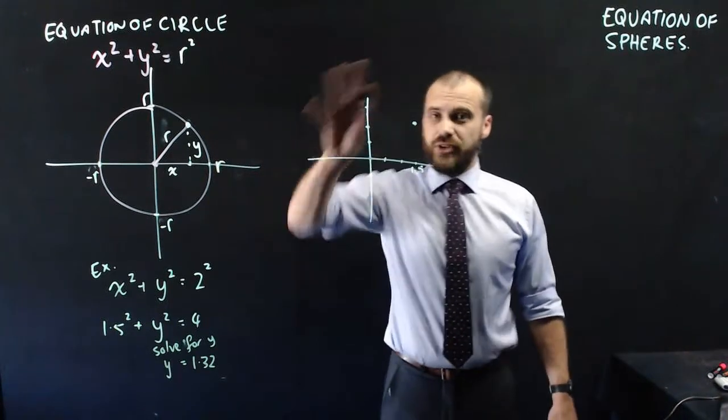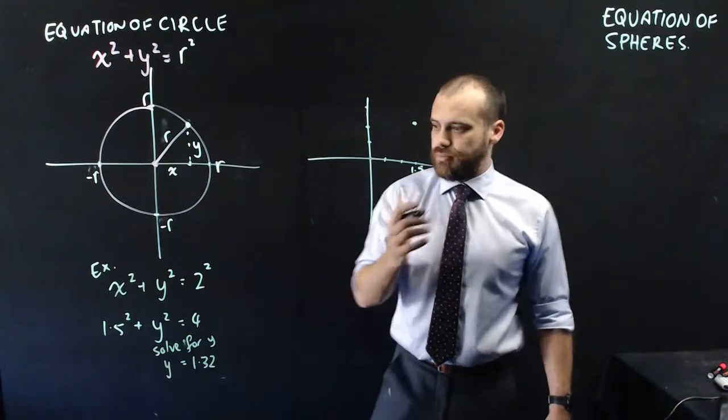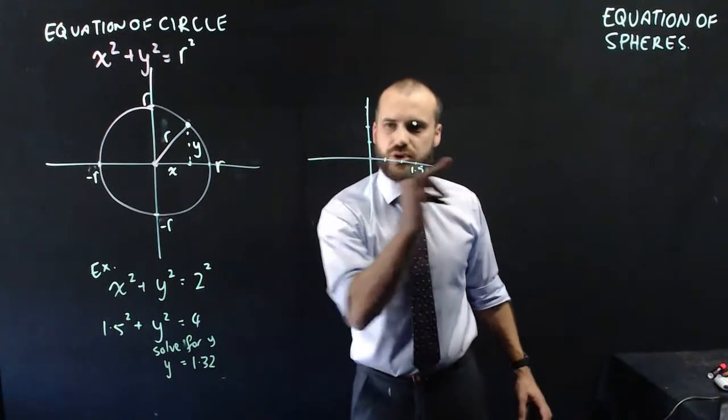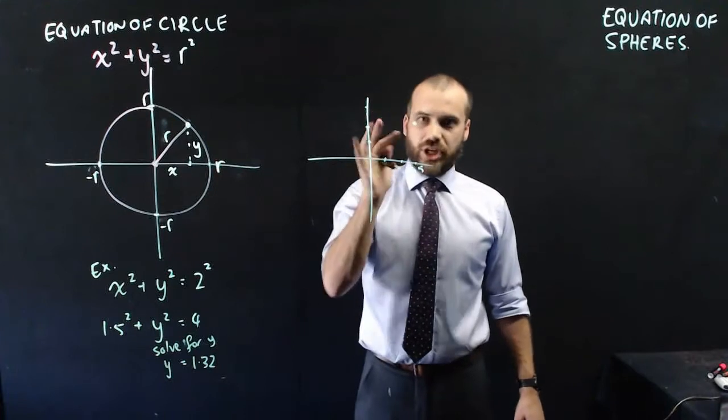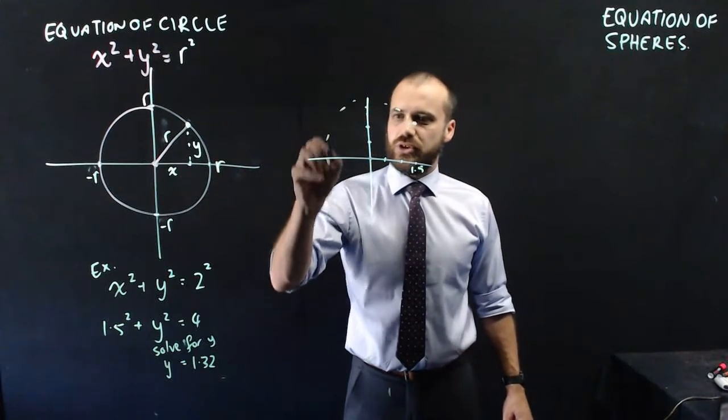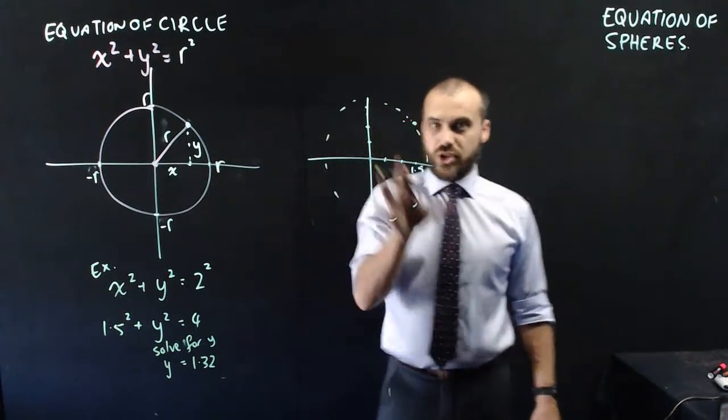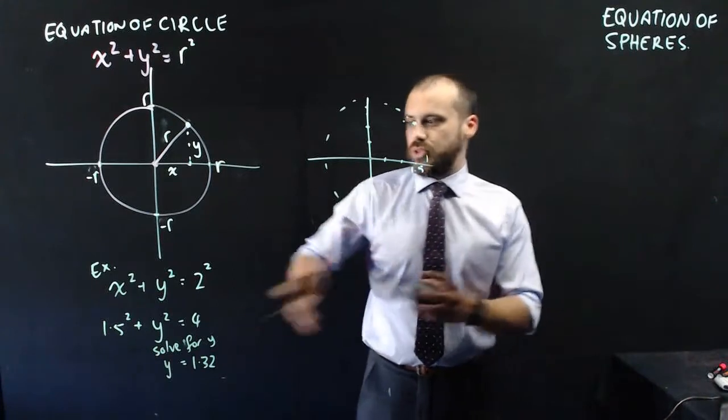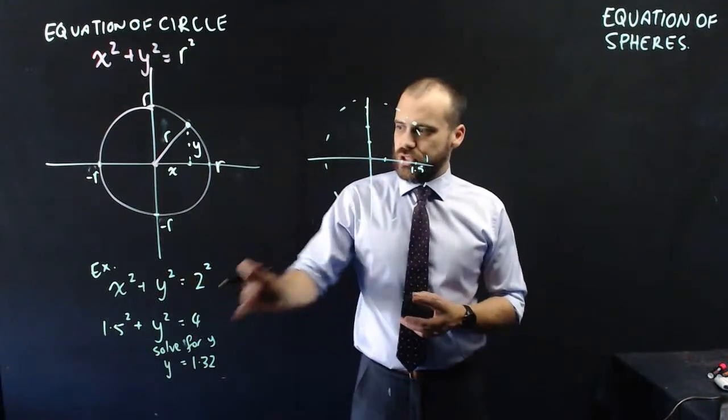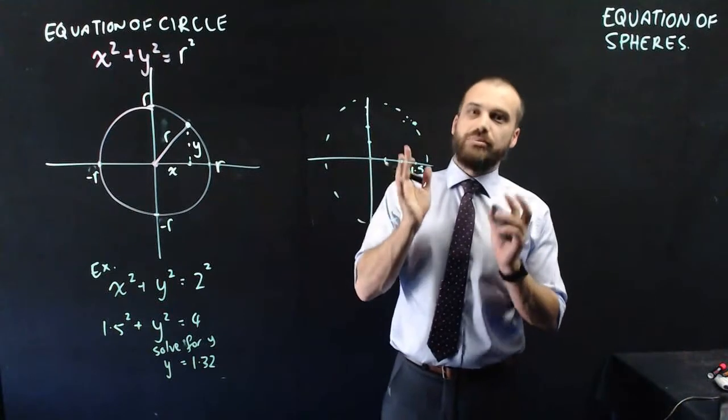You could do that for an infinite number of x values that are all between 2 and negative 2, and shove them all in there, and you get a bunch of dots around a circle. So that is what the equation of a circle is. It's a relationship between x and y based on Pythagoras' theorem.